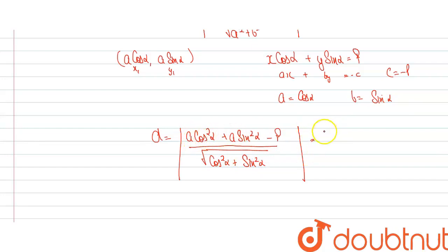By taking A common here will get cos square alpha plus sin square alpha minus P divided by under root of cos square alpha plus sin square alpha.